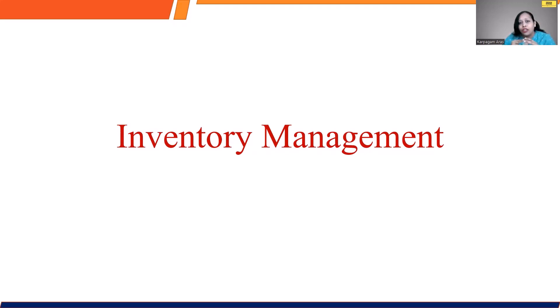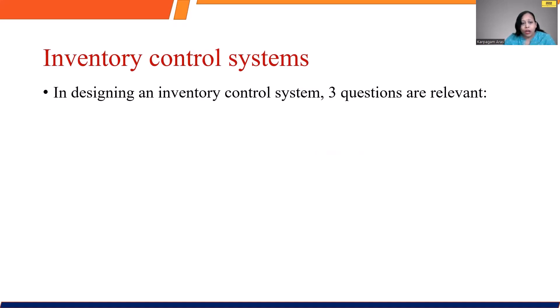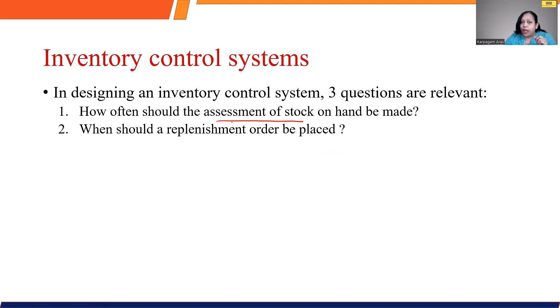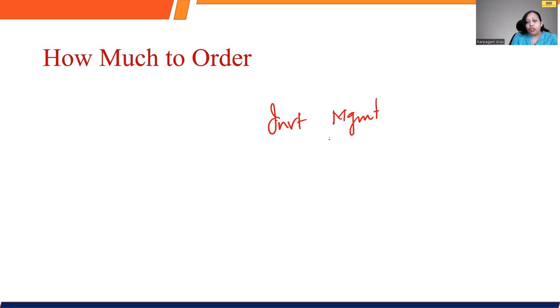In talking about inventory management, at the first level, an organization needs to talk about how to control the inventory. This inventory control system can be used at three different levels. At the very first level, we are more interested in identifying how much assessment needs to be done. At the second level, it's all about how much replenishment should happen and when. There are going to be plenty of costs associated, and two important questions need to be addressed. I will walk you through the important decisions and where to use them.